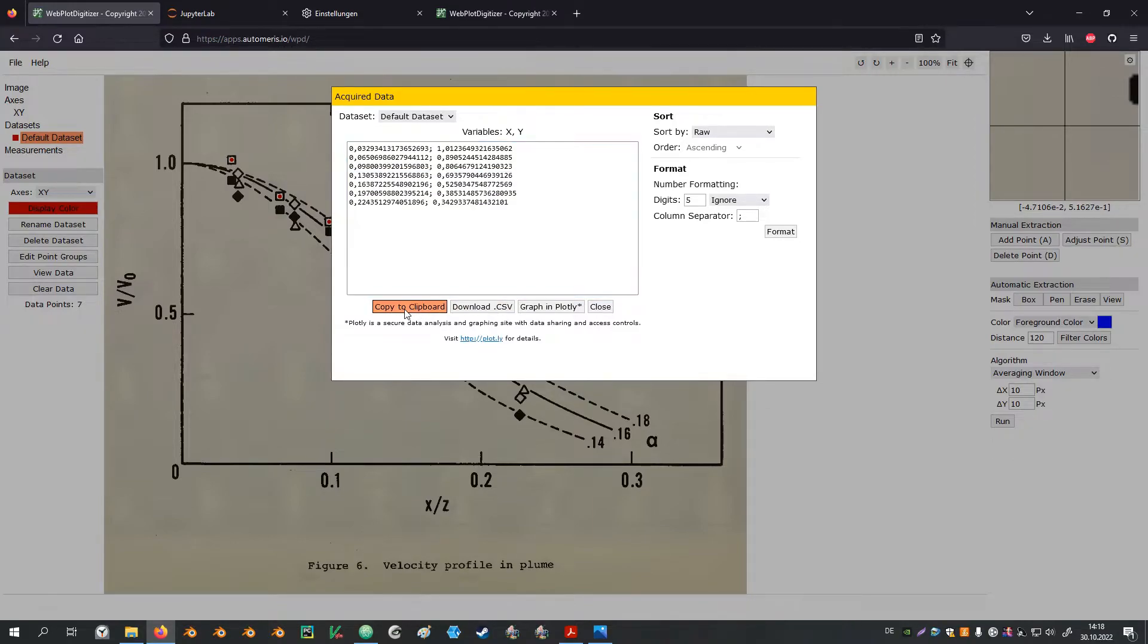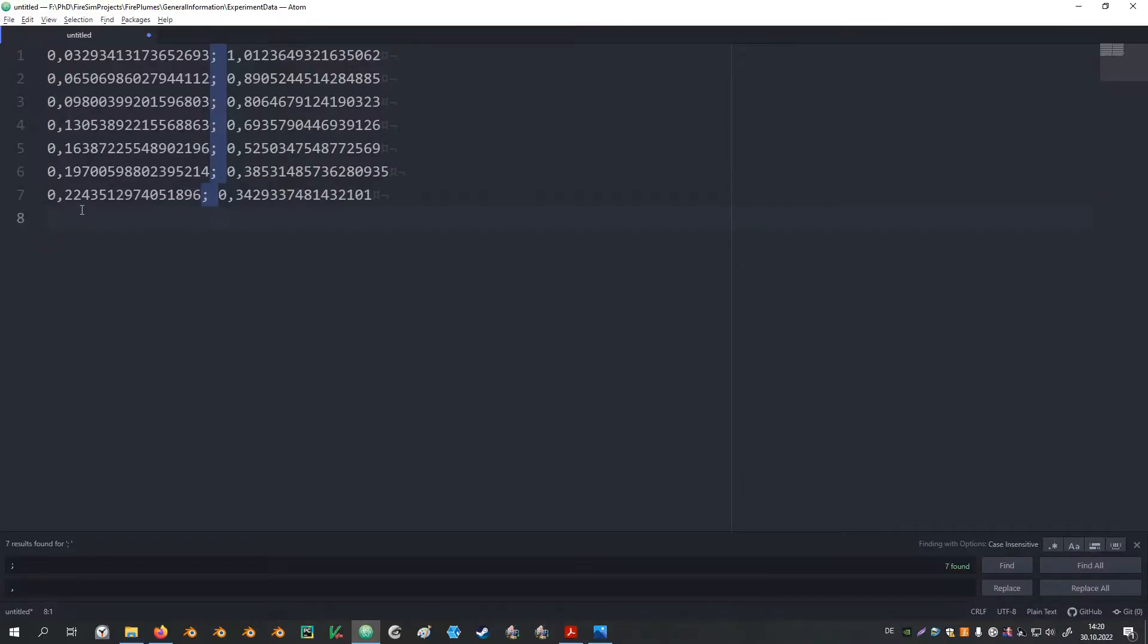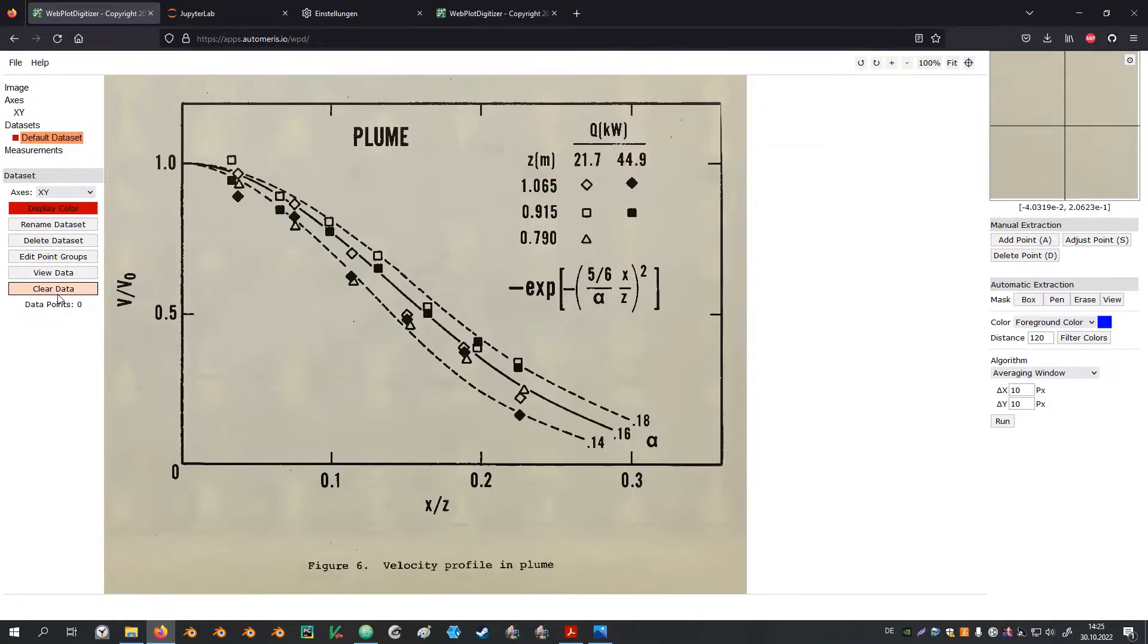Typically I copy the data, paste it into a text file and adjust it a little. In this case I would like to have the comma replaced with a decimal point. Using search and replace functionality I can search for all the commas and replace them with decimal points. Now I want to replace the semicolon with the following space to a comma as a column separator. To record the next data series just hit clear data and extract the next set.